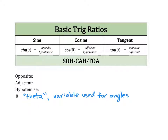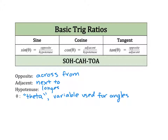Sine, cosine, and tangent use the words opposite, adjacent, and hypotenuse, which reference different sides of a right triangle. In math, opposite means across from — to find the opposite side, you're looking across from whichever angle we're working with. Adjacent means next to, so you're looking for the side next to the angle we're working with. The hypotenuse is always the longest side of a right triangle, and we can always find it because it is opposite the 90-degree angle.